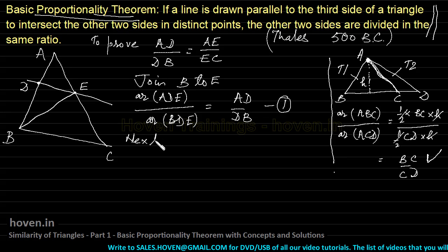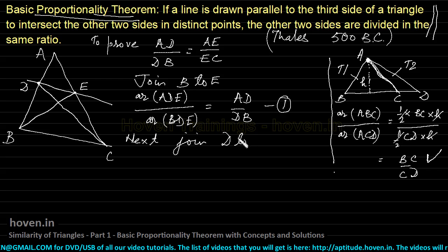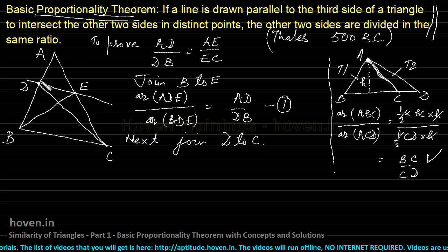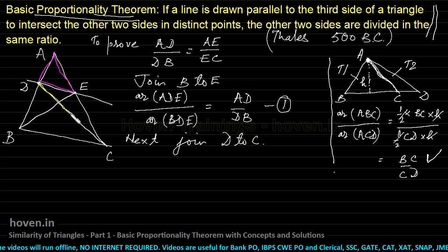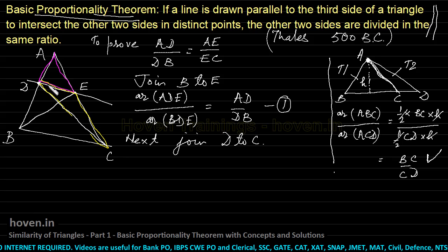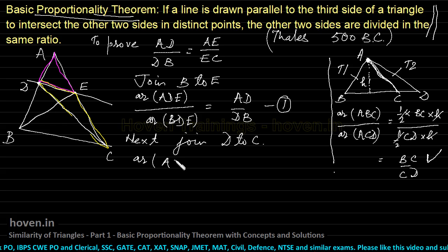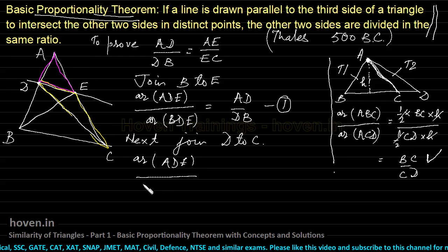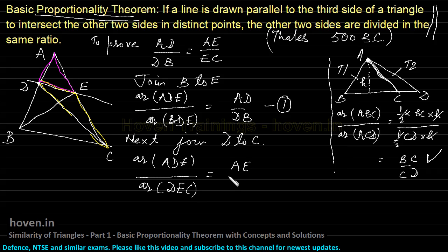Next, join D to C. Now we observe triangles ADE and DEC. These two triangles again share a common edge, with common vertex D. So, the area of triangle ADE to the area of triangle DEC equals AE by EC. This is equation two.